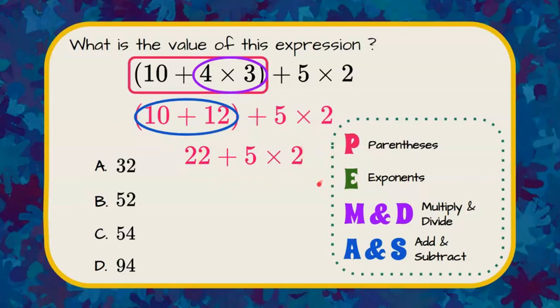There are no exponents, so the next thing we want to do is multiply and divide in order from left to right. Looking at our numerical expression, we need to multiply 5 times 2 before we can add. 5 times 2 is 10.